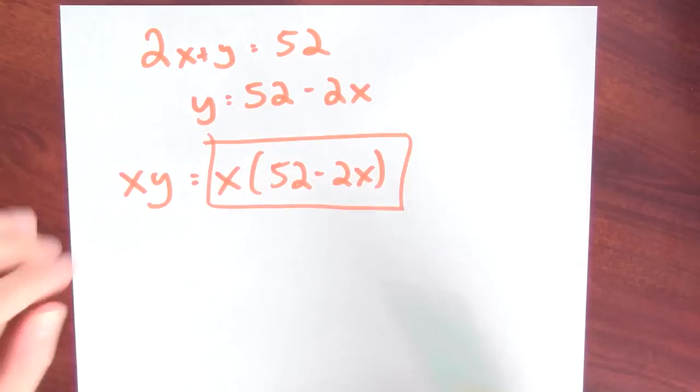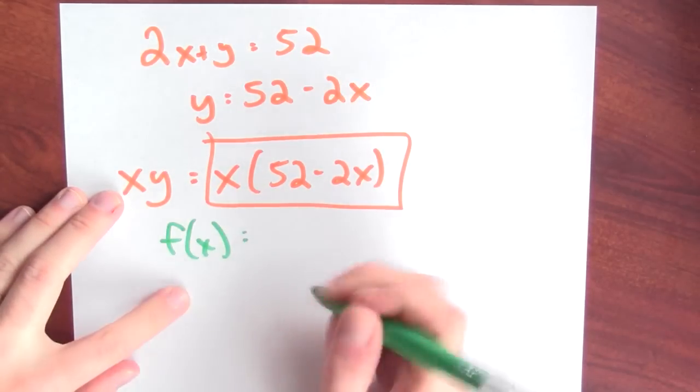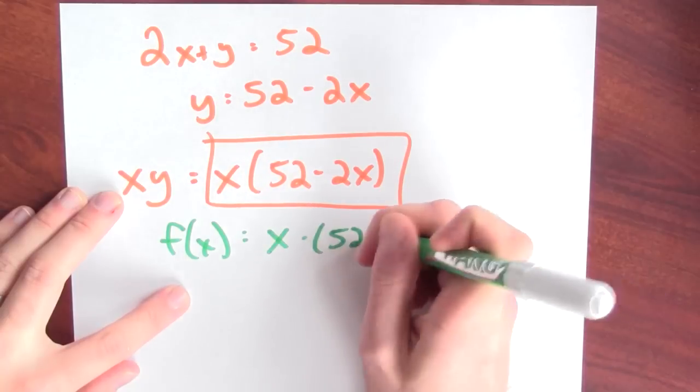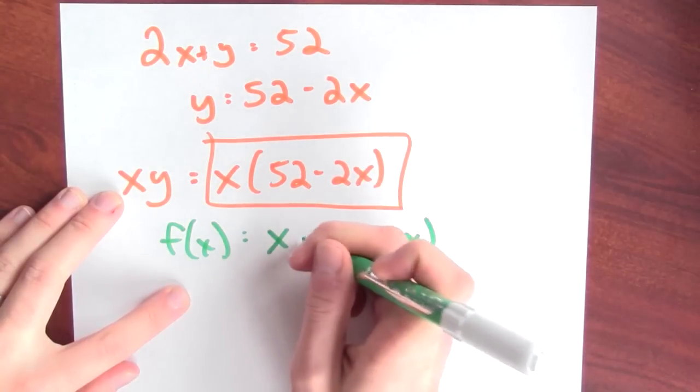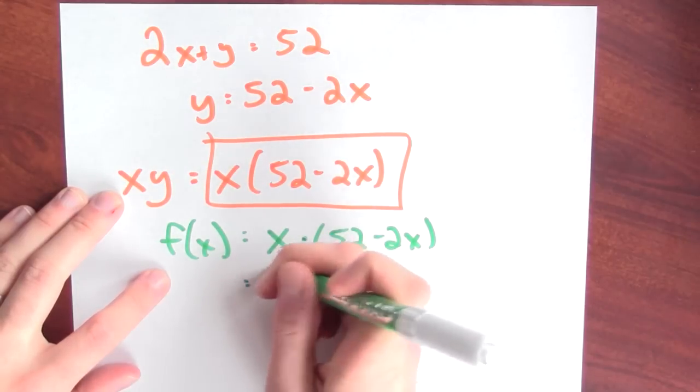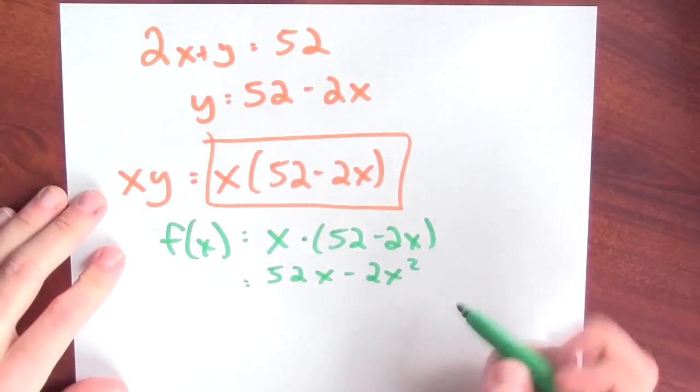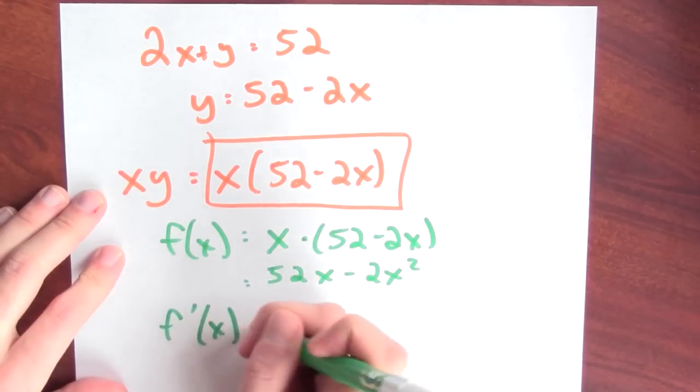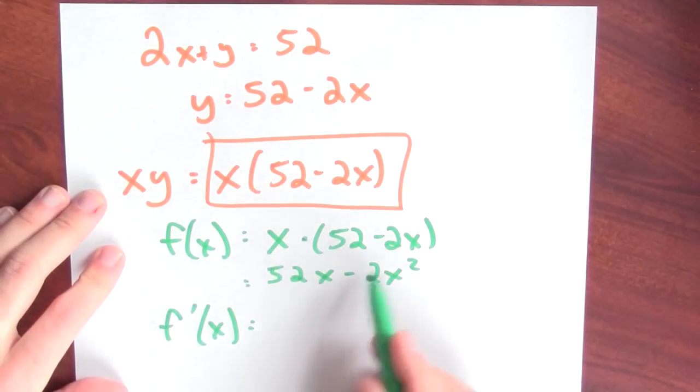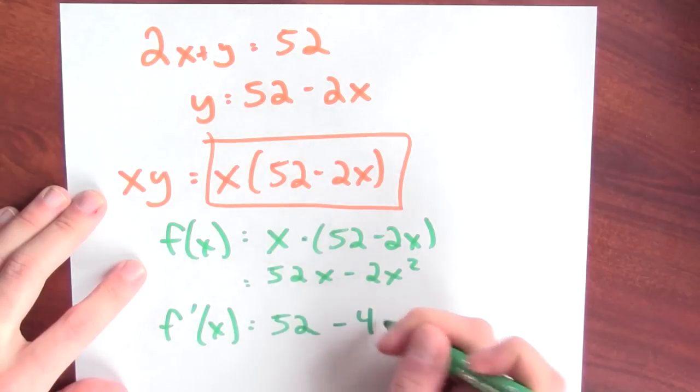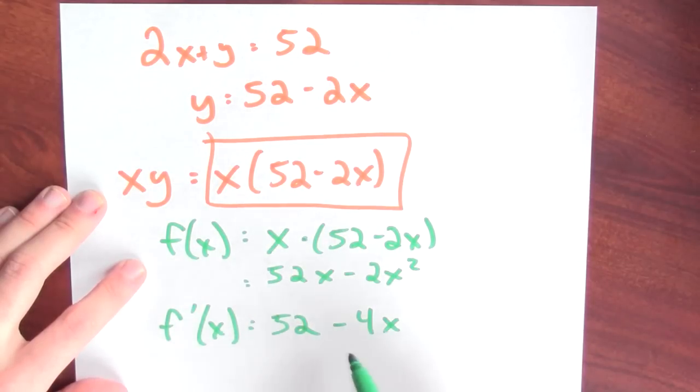Now I've got a function of one variable so I can apply calculus. I can differentiate this thing and search for the critical points. So let's call this function f. So f of x is x times 52 minus 2x. I could distribute this and write f is 52 times x minus 2x squared. Now I can calculate the derivative. The derivative of f is the derivative of 52x minus the derivative of 2x squared. The derivative of 52x is just 52. The derivative of 2x squared is 4x. So the derivative of f is 52 minus 4x.